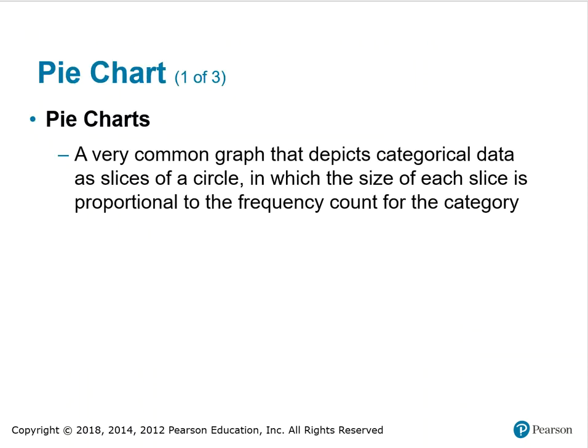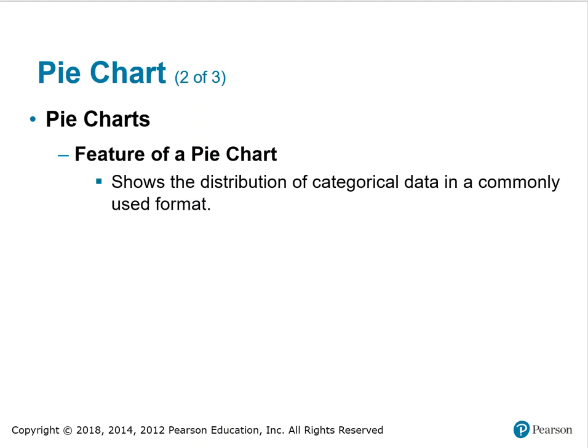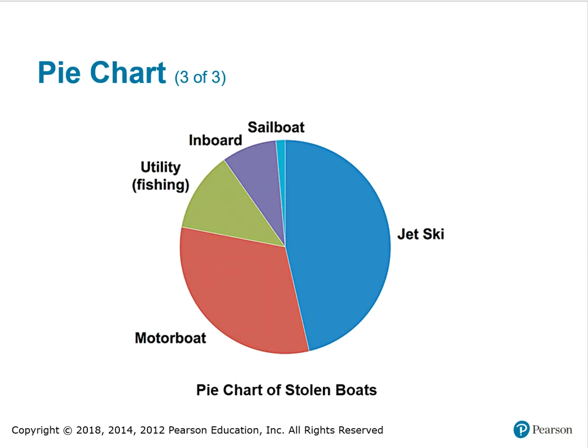Pie charts are a very common graph that depicts categorical data as slices of a circle, in which the size of each slice is proportional to the frequency count for the category. The feature of a pie graph is it shows the distribution of categorical data in a commonly used format. Here's an example showing the pie chart for stolen boats — notice that the most frequently stolen boat is a jet ski, followed by motor boats.